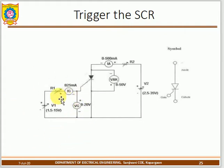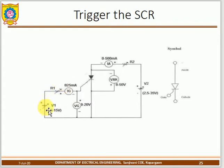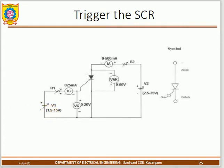This method of turning on the SCR is called gate triggering. Specifically, the method used here — where only resistance is used through the gate — is the resistance-type gate triggering method. This video will cover different gate triggering methods.